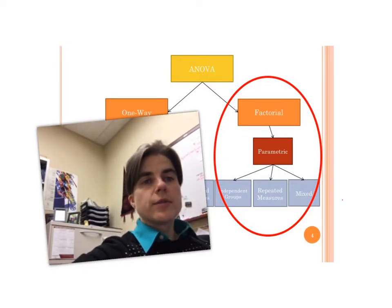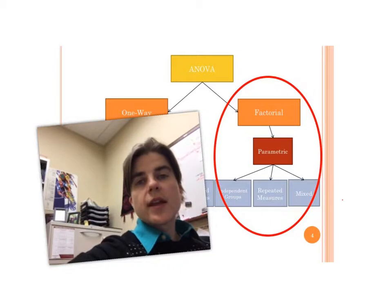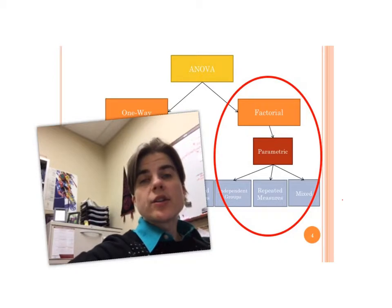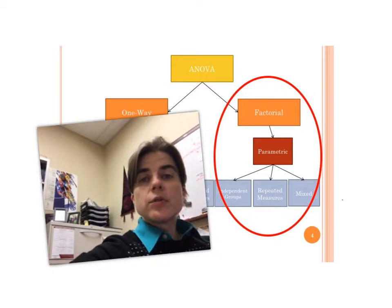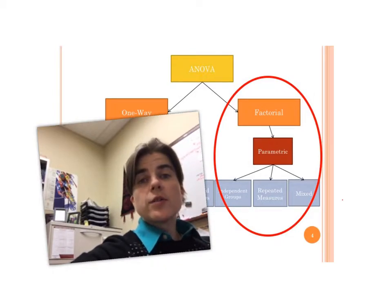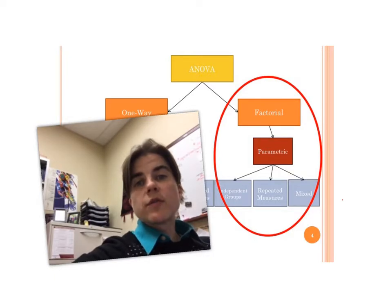In class so far we've had an opportunity to look at one-way independent groups ANOVAs and repeated measures ANOVAs, both one-way. Now we're going to do it in the factorial design. Instead of adding more repetition in class, I'm going to introduce repeated measures factorial ANOVA and mixed factorial ANOVA through video, so you still get exposed to it — especially if you're doing it for your thesis — without the same repetition in class.